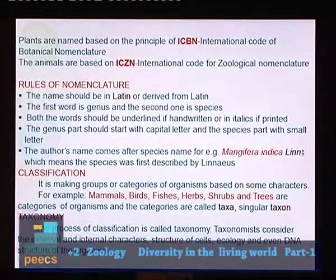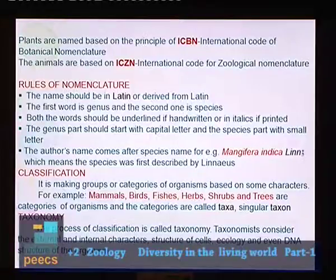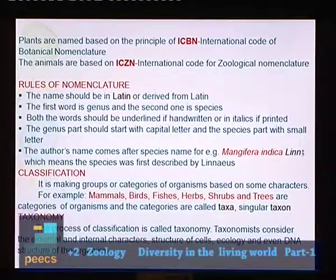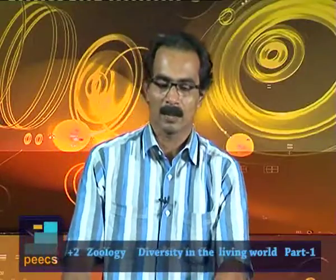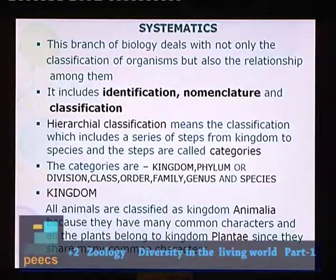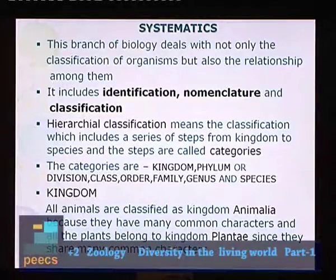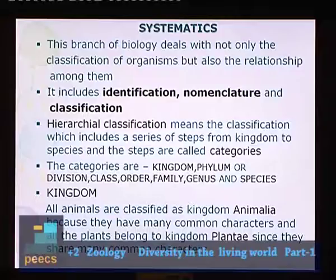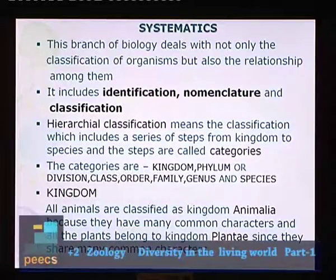Systematics has a broader meaning — this branch of biology deals not only with classification of organisms but also the evolutionary relationships among them. It includes identification of an organism, nomenclature (giving a name), and classification.